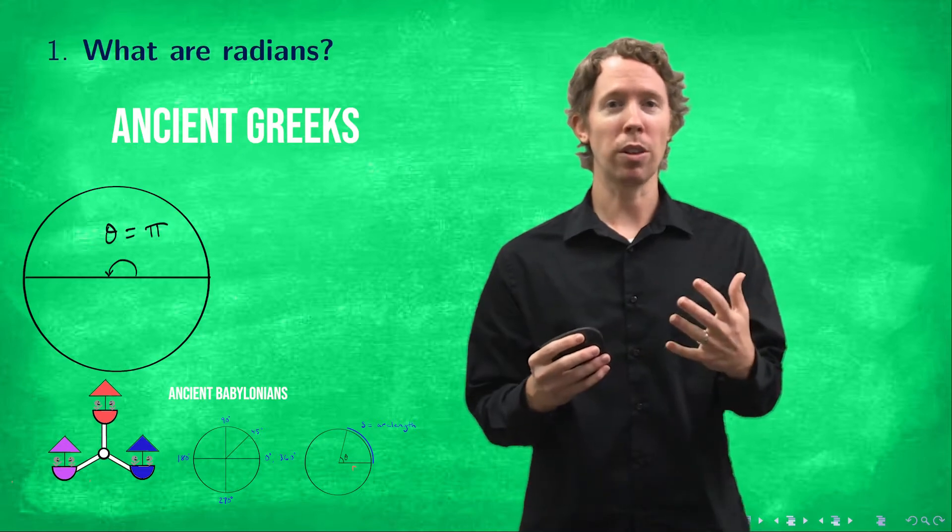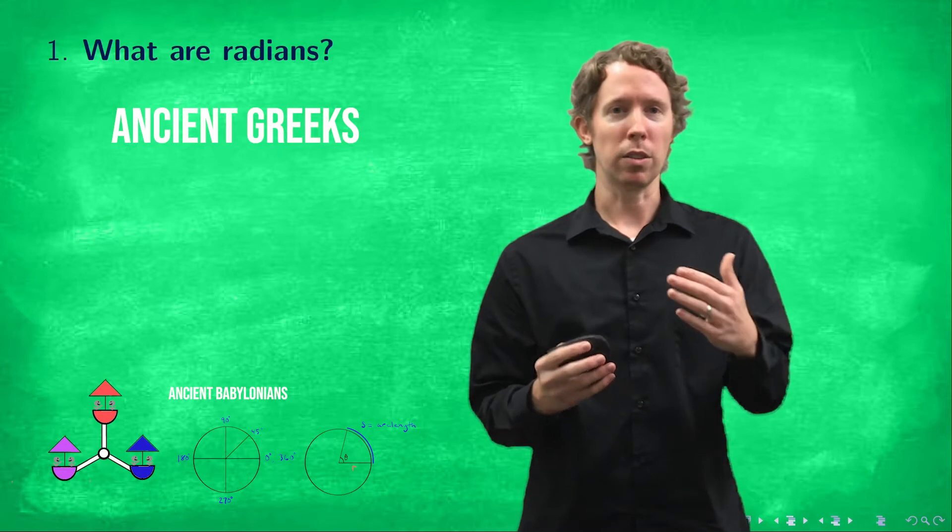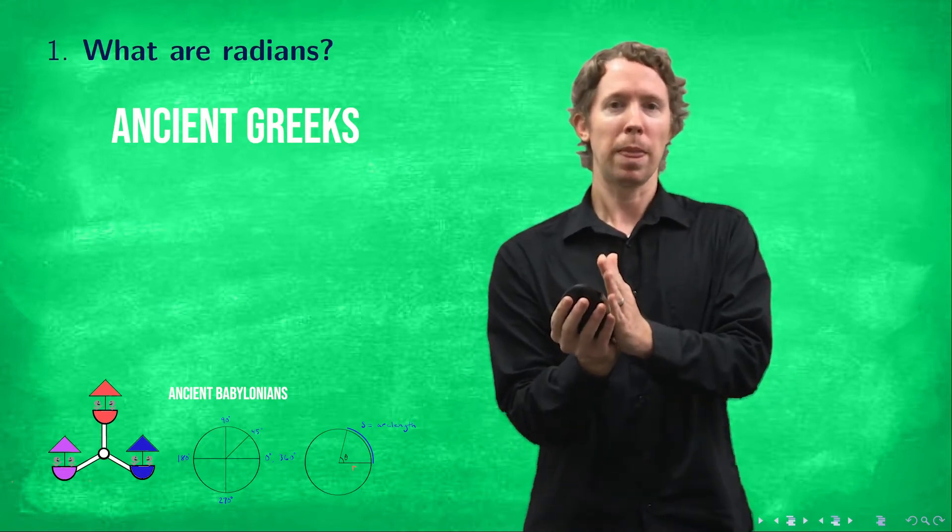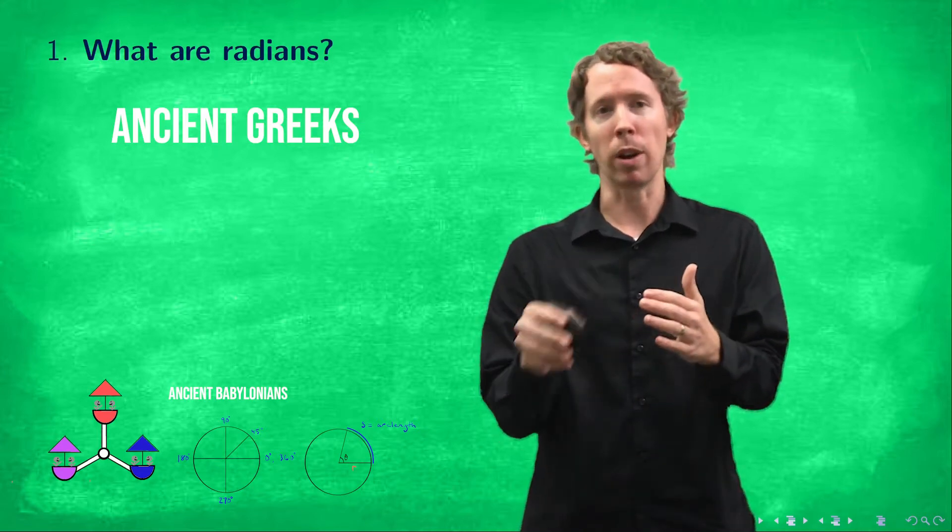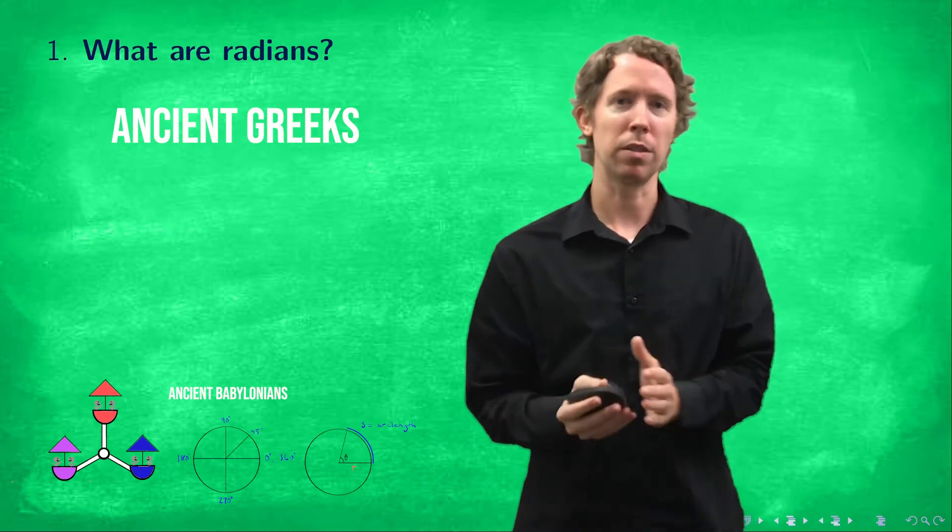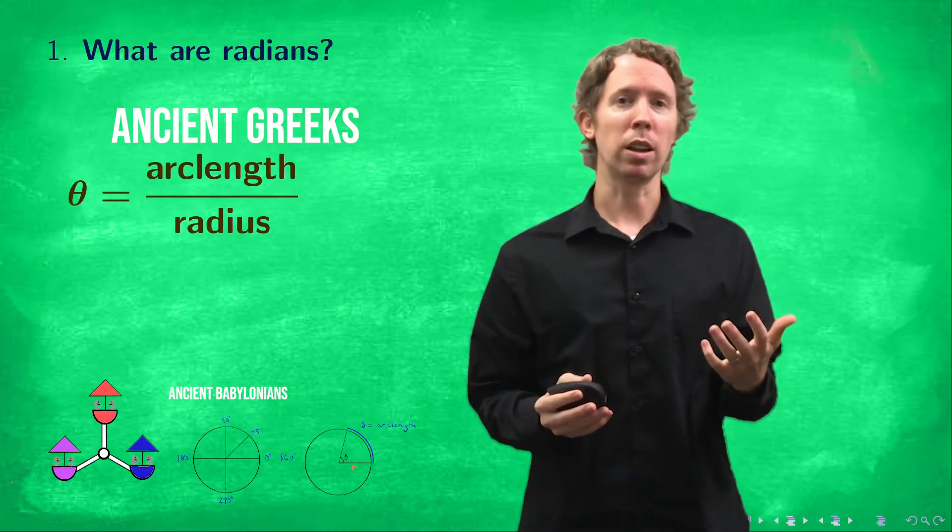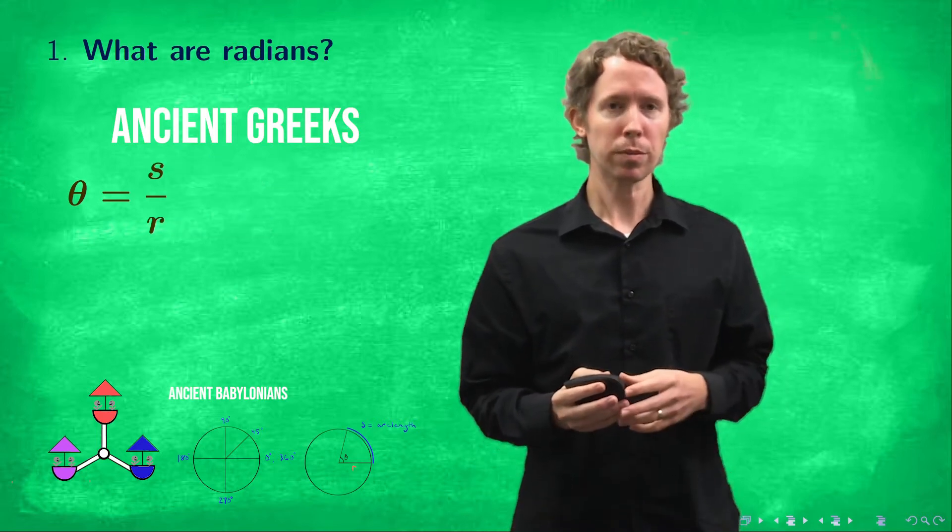So if you've got an angle theta and you want to say how many radians it is, the equation is you just take the arc length, so the distance cut out on the edge of the circle, and you divide it by the radius. It tells you how many radiuses, how many radii are inside of that arc length. And we usually denote arc length by s so we'll write it as s over r equals theta.